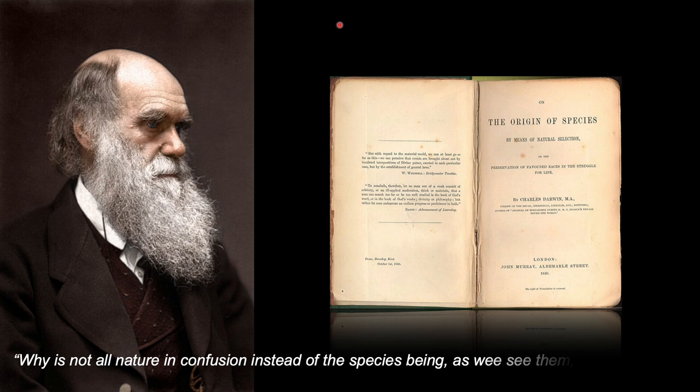In fact, he asked this rhetorical question: Why is not all nature in confusion, instead of the species being, as we see them, well-defined? Because he viewed evolution and natural selection as a bit-by-bit, small incremental change-by-change process, and therefore we should see nature in that process itself rather than having divided species boundaries.